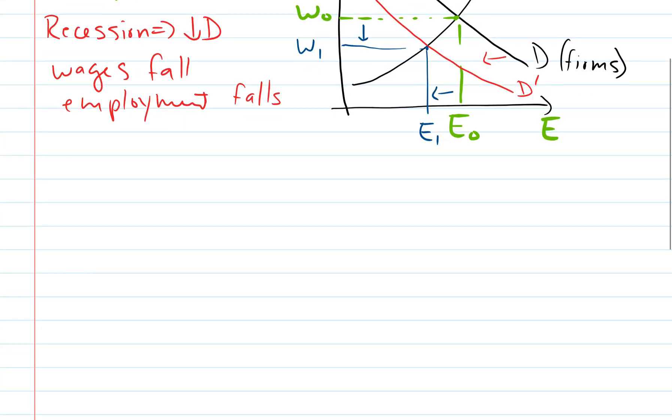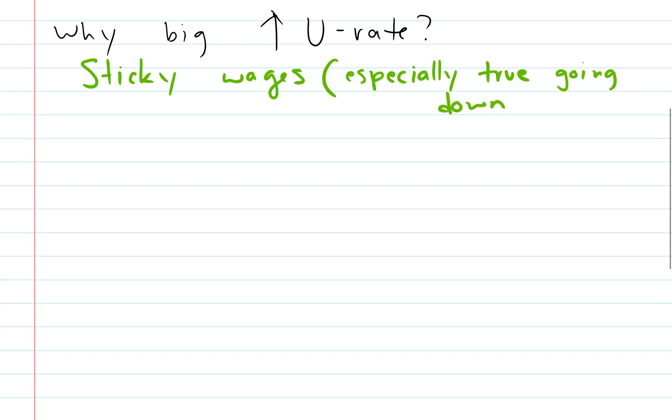So the idea is, this is the puzzle. We're saying, why do we get a big increase in the unemployment rate? And the answer seems to be, at least partially related to, we have sticky wages. And so what do we mean by sticky wages? The wages don't move very easily. Something keeps them from changing. And this is especially, seems to be especially true going down. So the wages have a hard time to fall. Things keep them from falling.